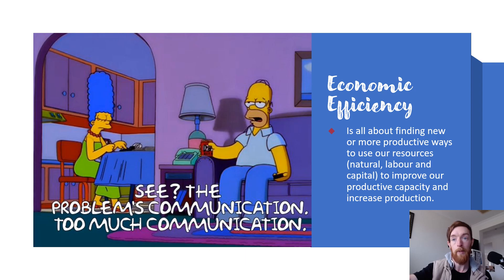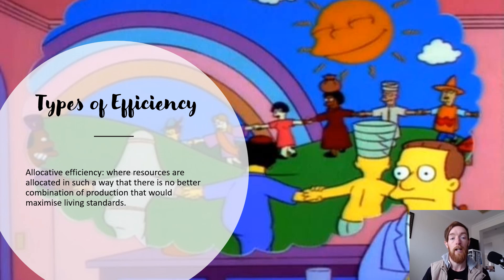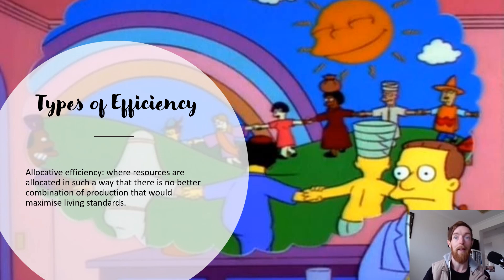With our two specific types, we have allocative efficiency. Allocative efficiency is where resources are allocated in a way that there is no better combination of goods and services produced that would better maximize living standards — this is the best it can be, and any other combination of resource allocation would make living standards worse. In allocative efficiency, things are likely to be more equitable because we are doing things that are going to help everyone's living standards overall. Some reasons why we struggle to achieve allocative efficiency is that some socially undesirable goods and services are very profitable, so businesses produce those rather than things that benefit us like education, health, and medicines.